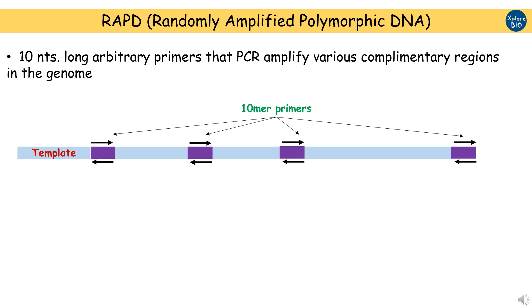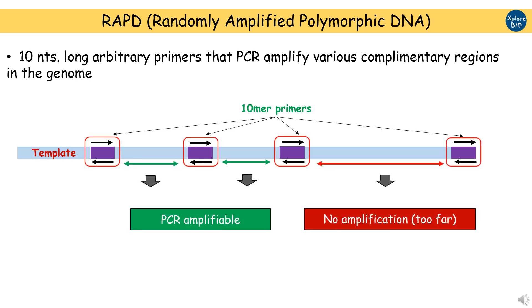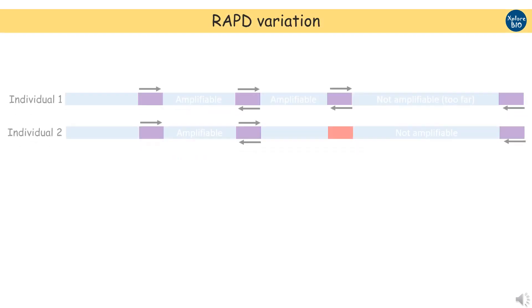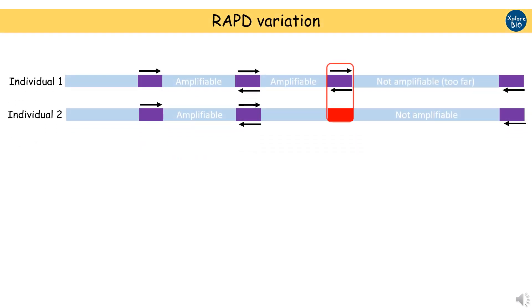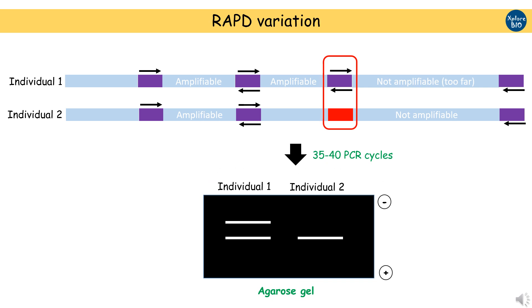RAPD amplification depends upon the template complementarity region which occurs within the amplifiable limits of the DNA polymerase. Different individuals may have variation in RAPD primer binding sites, revealing genetic variations among them based on the binding pattern of RAPD products resolved on the agarose gel.